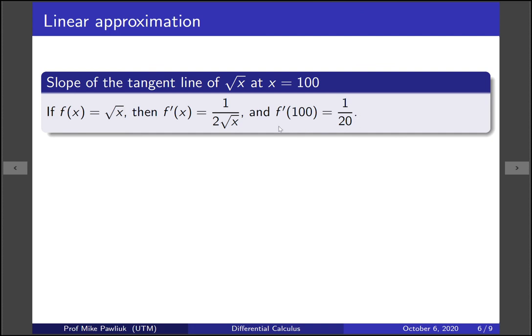Again you can do this without a calculator because it only involves 1 over the square root of 100 which we know. Great so we figured out the derivative which is the slope of the tangent line.